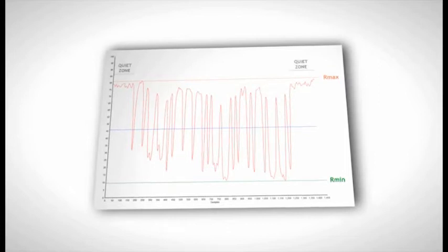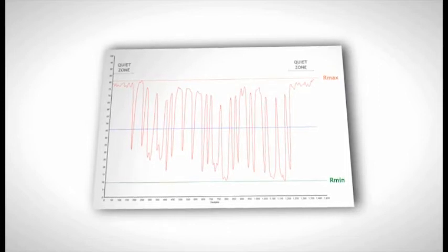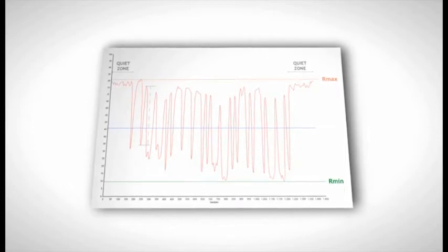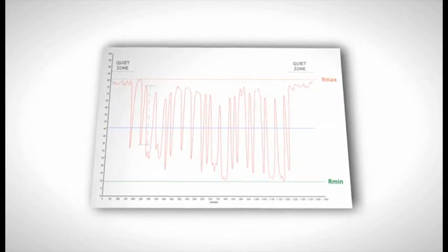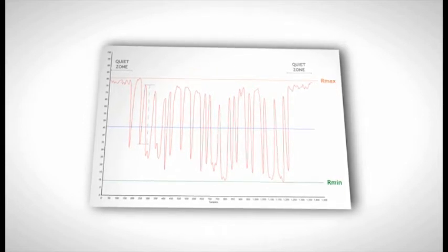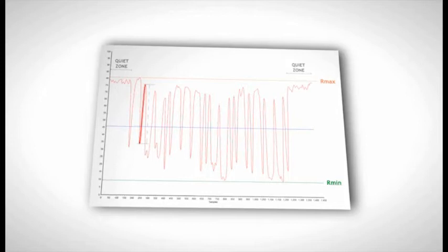The quiet zones are assessed for width. The contrast is measured at each bar edge and compared to the overall differences between Rmax and Rmin. The edge with the weakest contrast is identified. In this case, it's the fourth edge from the left.